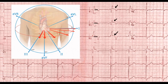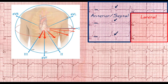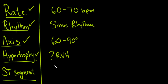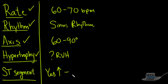Because these ST changes are in the precordial leads, we're looking at right ventricular precordial and anterior left ventricular territory. Notice we don't see them going over to the lateral leads. So the answer is yes, there is elevation consistent with a ST segment elevation myocardial infarction.